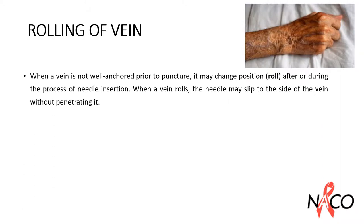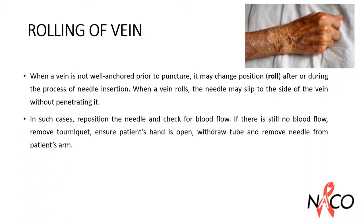Rolling of the vein: when a vein is not well anchored prior to puncture, it may change position or roll after or during needle insertion. When a vein rolls, the needle may slip to the side of the vein without penetrating it. Reposition the needle and check for blood flow. If there is still no blood flow, remove the tourniquet, ensure the patient's hand is open, withdraw the tube, remove the needle, and consider an alternative site on the opposite arm.